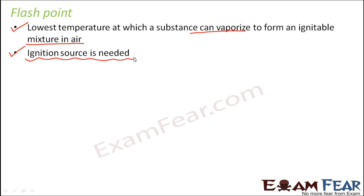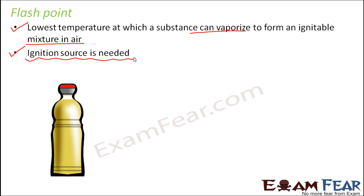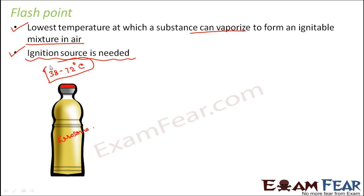Let us take this example — if you think of kerosene, kerosene is a combustible substance. If you talk about the flashpoint of kerosene, it is somewhere around 38 to 72 degrees Celsius. That is the flashpoint of kerosene.